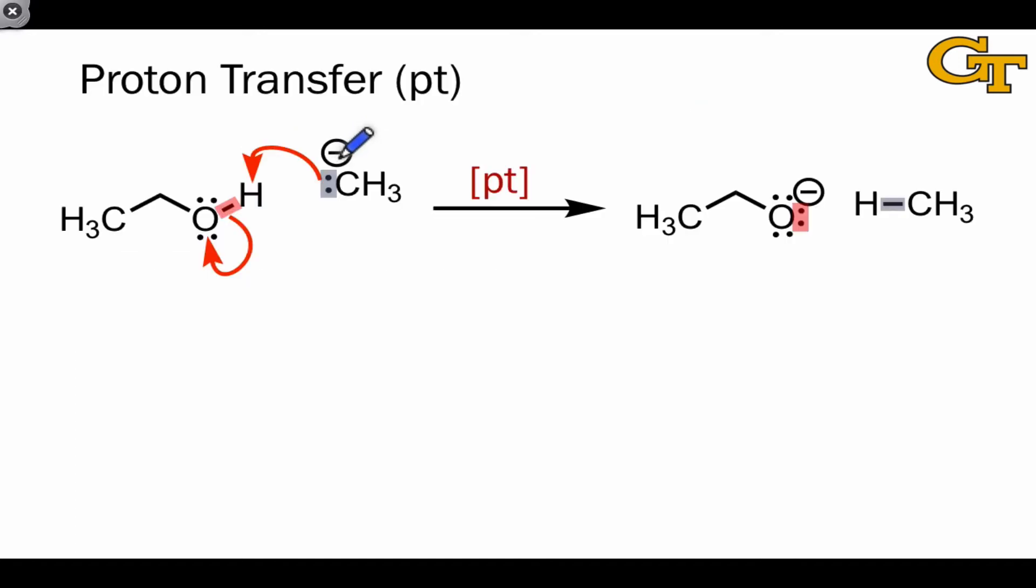In a typical proton transfer, or PT, elementary step, a pair of electrons in the base is donated towards a hydrogen in the acid. The hydrogen is attached to an electronegative atom that wants to accept the pair of electrons in the XH bond. Here, X is an oxygen.